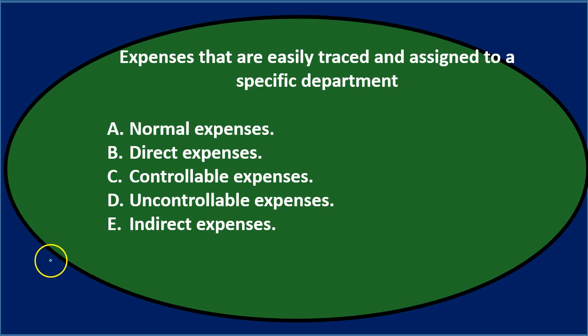Next question: Expenses that are easily traced and assigned to a specific department. A: Normal expense. B: Direct expense. C: Controllable expense. D: Uncontrollable expense. E: Indirect expense.